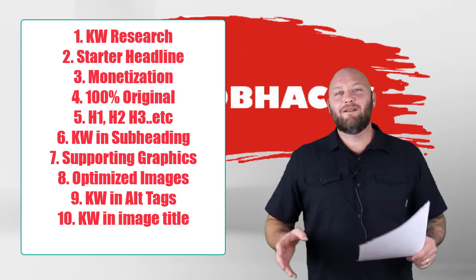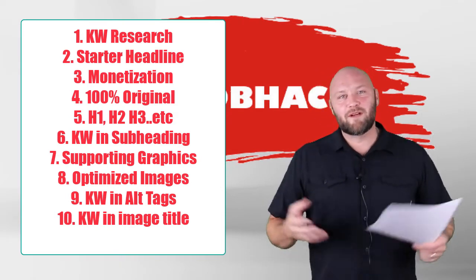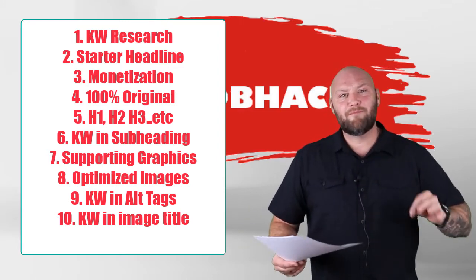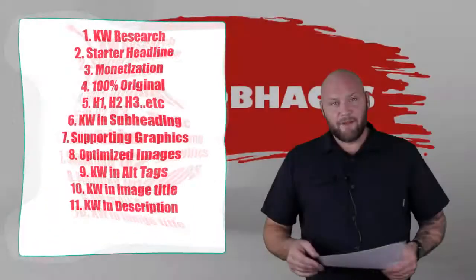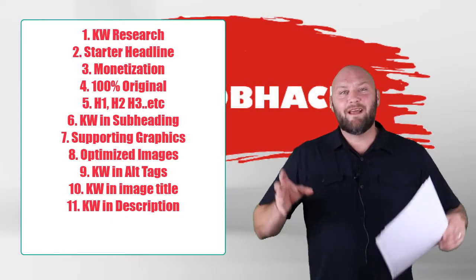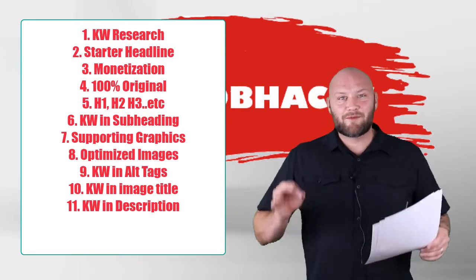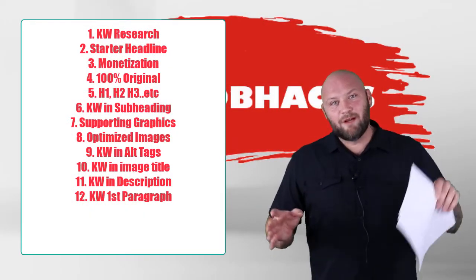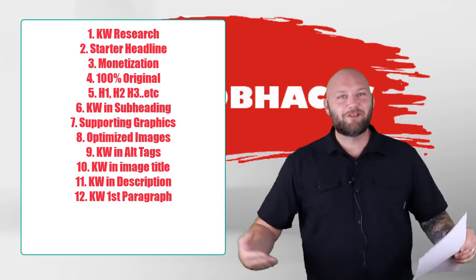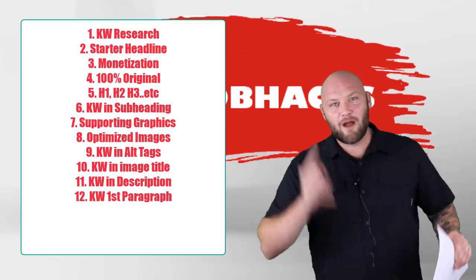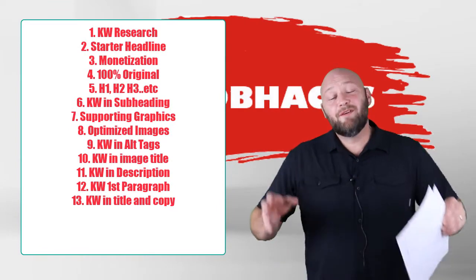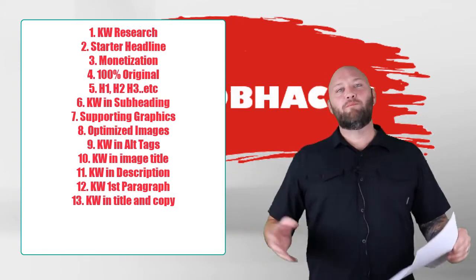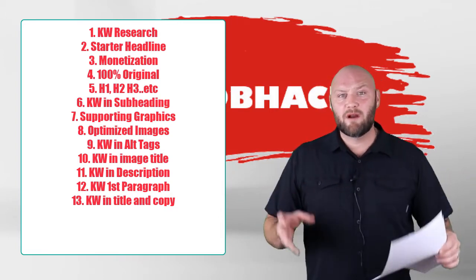You don't need to do this for every single image, but within a few of them you should have your primary keyword in the alt tags — this can be done right inside WordPress when you add the image. Number ten: use your primary keyword in the title of your image file. For example, if your primary keyword is 'how to make money online,' name the file how-to-make-money-online.jpeg. Number eleven: use your primary keyword in the meta description.